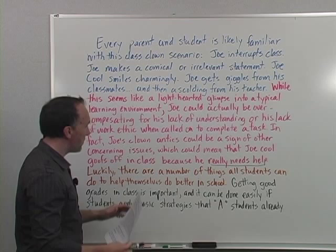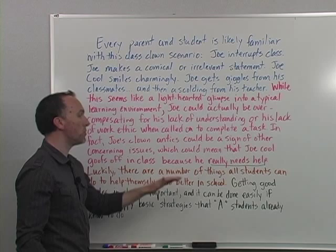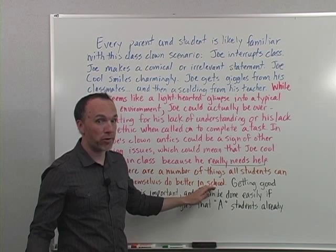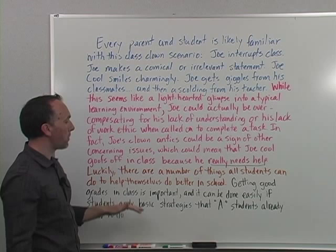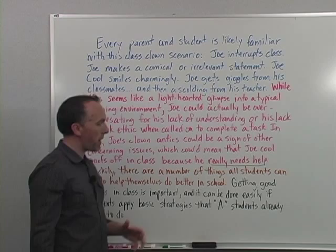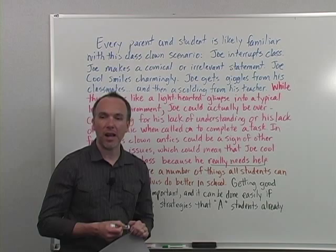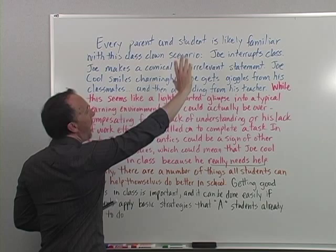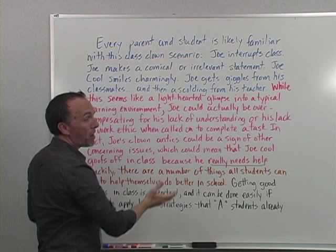Everyone needs help with that. My transition from that point to the thesis is this sentence: 'Luckily, there are a number of things all students can do to help themselves do better in school.' That's another broad statement, but it brings me right to my thesis: 'Getting good grades in class is important, and it could be done easily if students apply basic strategies that A students already know to do.' I expounded on the thesis slightly by adding extra information at the end. The key is seeing that funnel — starting with the opening story, moving to why the kid is acting out, then to ways students can do well in school, and straight down to the thesis.